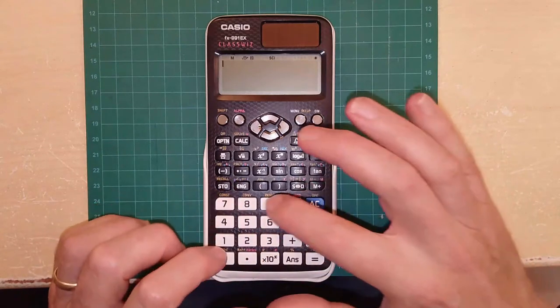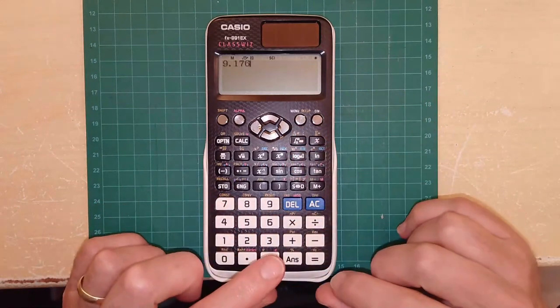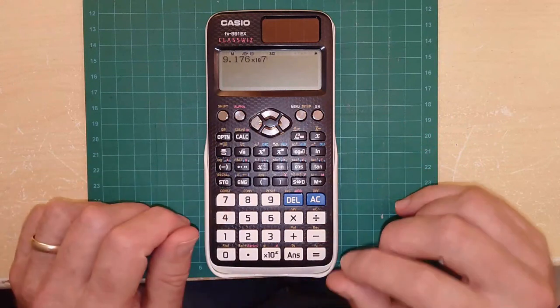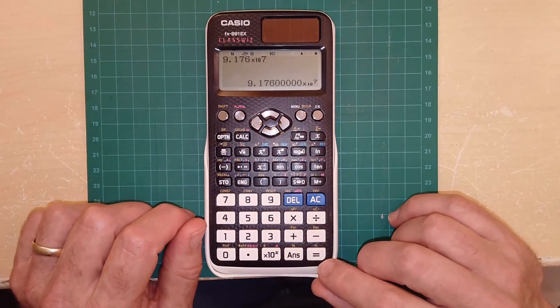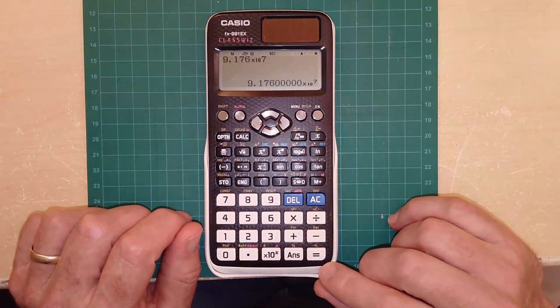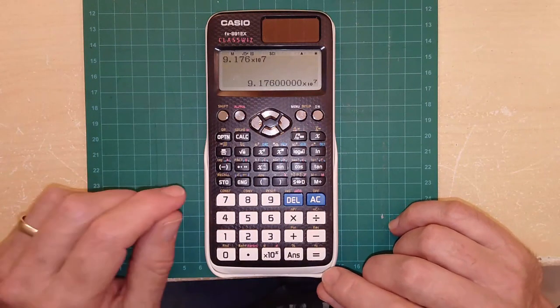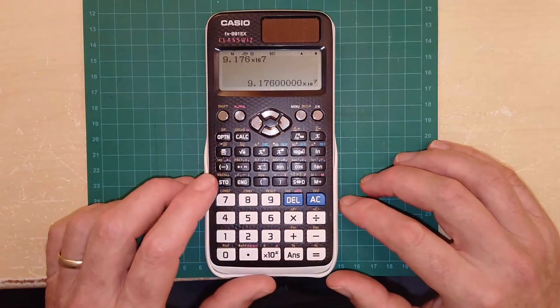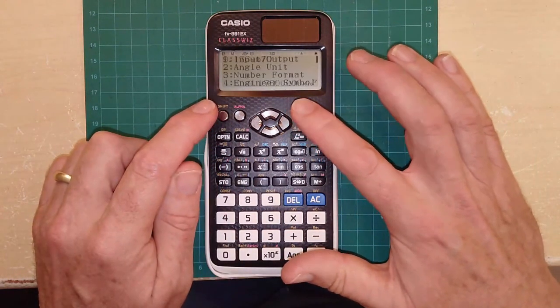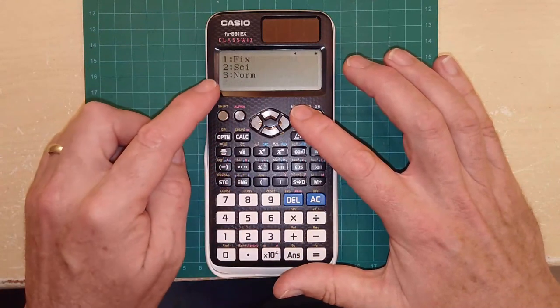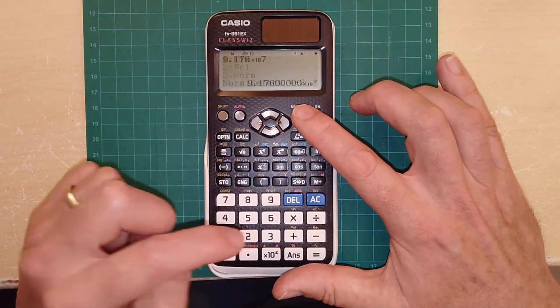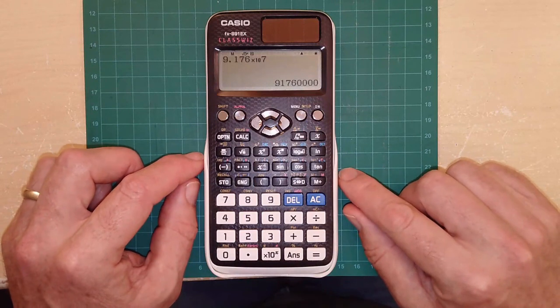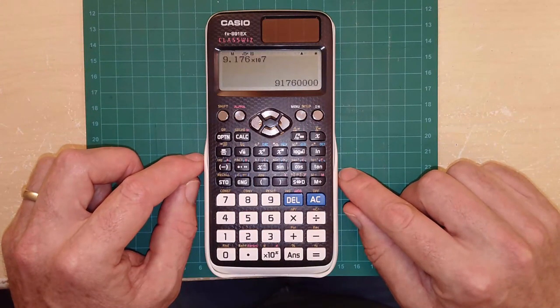Question B: write 9.176 times 10 to the 7 as an ordinary number. I'm going to take 9.176 and it's times 10, this button down here, to the 7. In standard form that would be 9.176 times 10 to the 7. We need to convert that into an ordinary number. So I have my science notation. To convert it into a normal number, three number format and then three norm and then I'm going to select two. Okay and then equals. So it's 91,760,000.